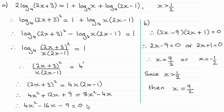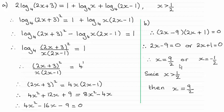In part B it was just a question of either factorising this or using the quadratic formula. By factorising and putting each factor equal to 0 we get two values for x. We know that x has to be greater than a half — the reason is that if it were less than a half, this term would be negative, and you can't have the log of a negative value. So we reject x equaling minus a half and we end up with x equaling 9 over 2, or 4 and a half.